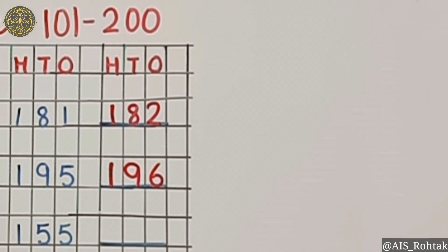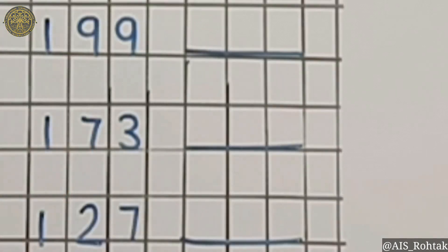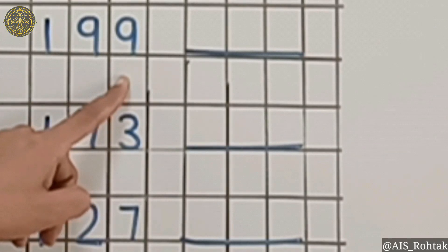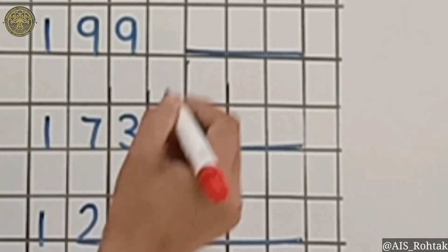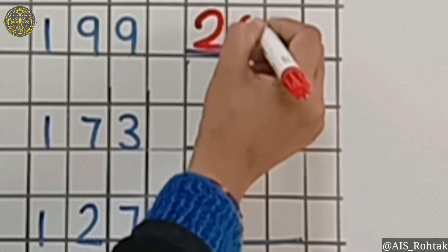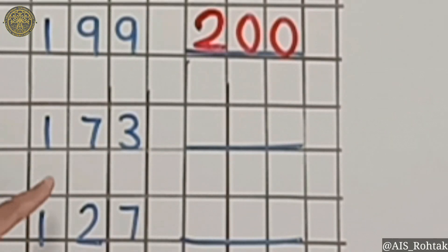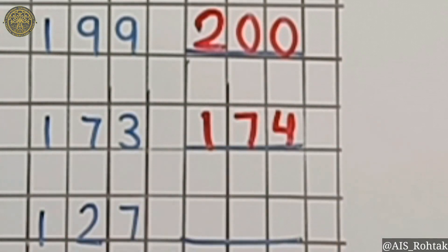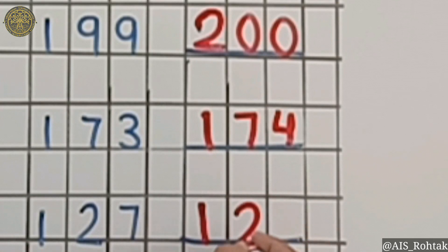154 — after number will be 155. 156 — after number will be 156. After number will be 200. 173 — after number will be 174. 127 — after number will be 128.